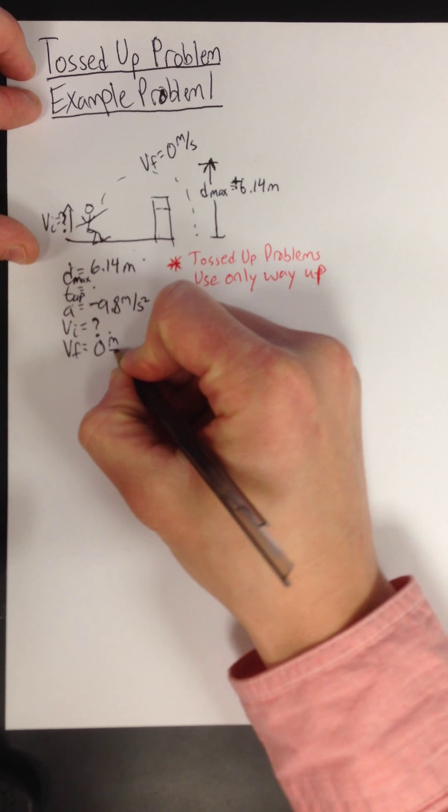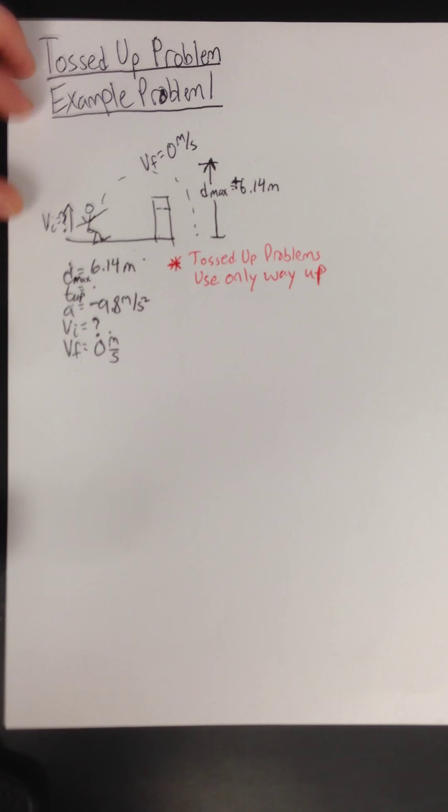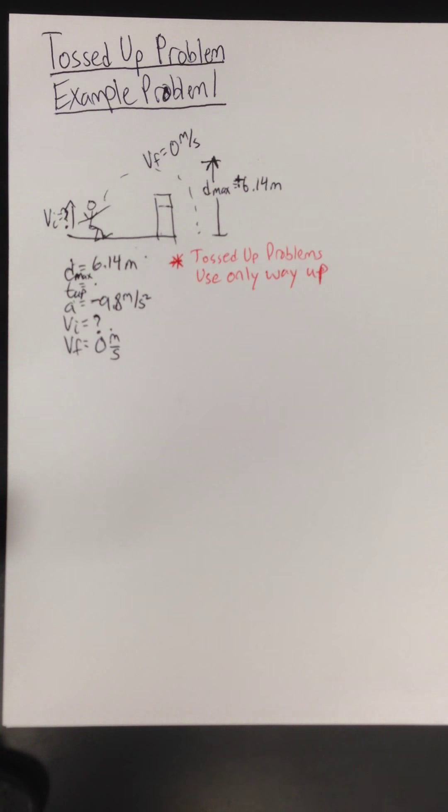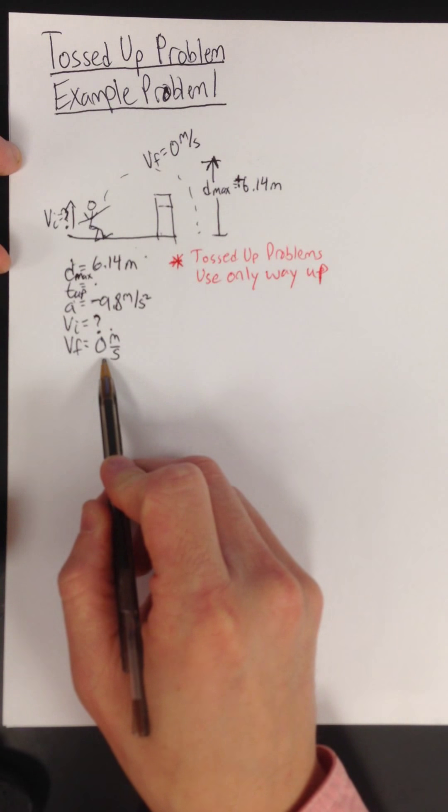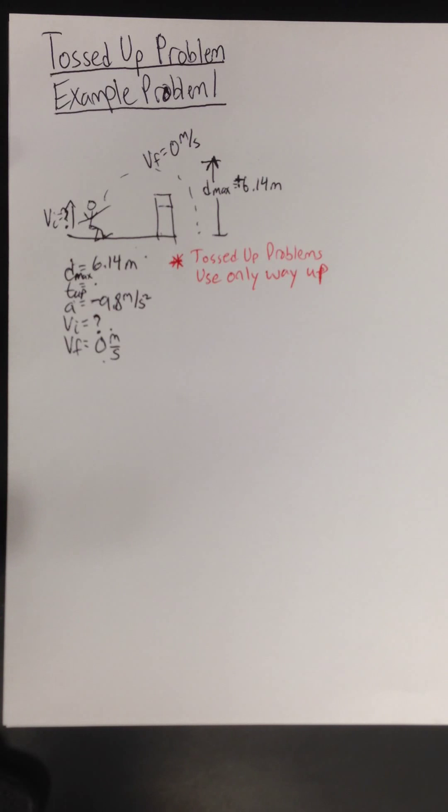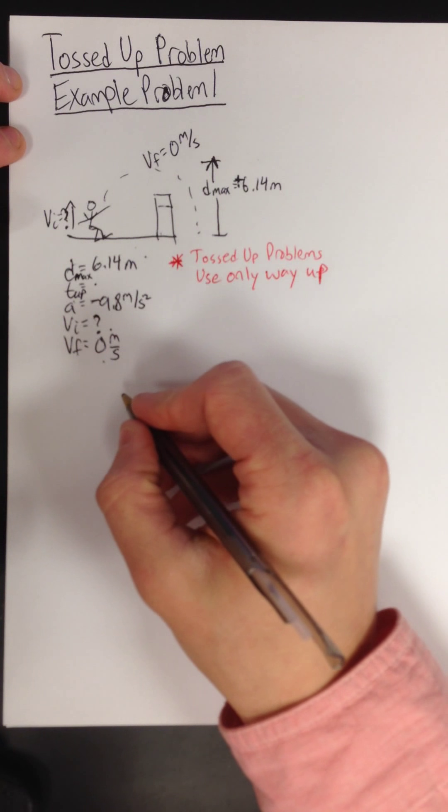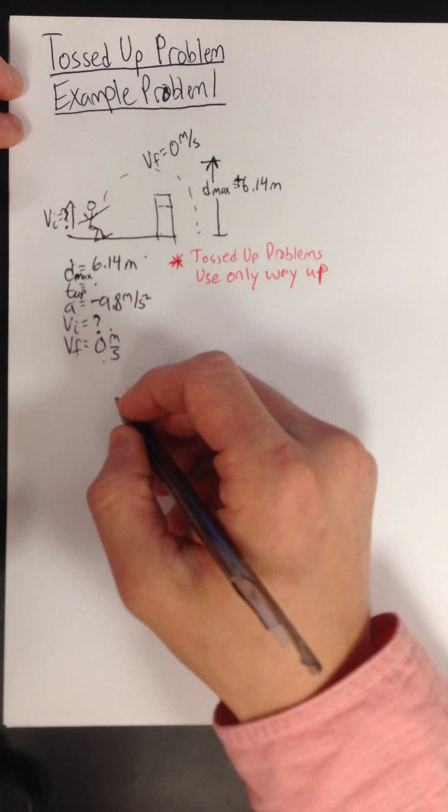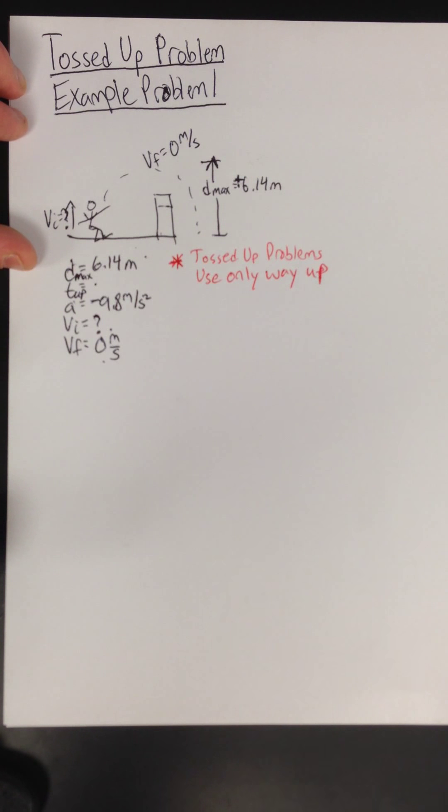And because we're always using the way up, the way up always ends at the top. So the final velocity will always be 0 for a tossed up problem. You could be guaranteed of that. So now you need to choose an equation to solve for his initial velocity.